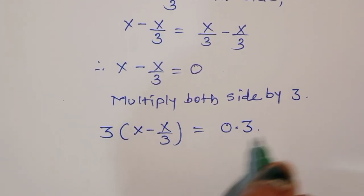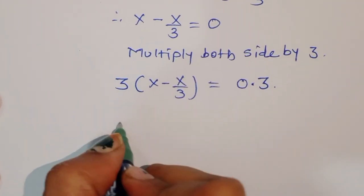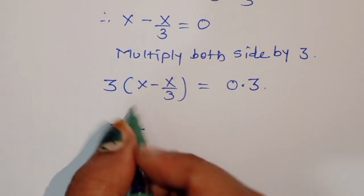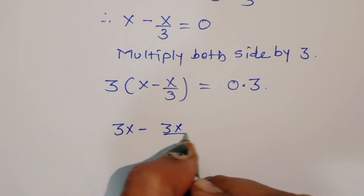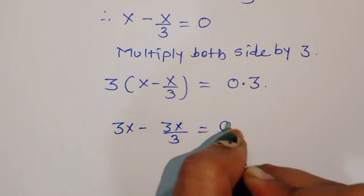So this will become 3x minus 3x/3 is equal to 0.